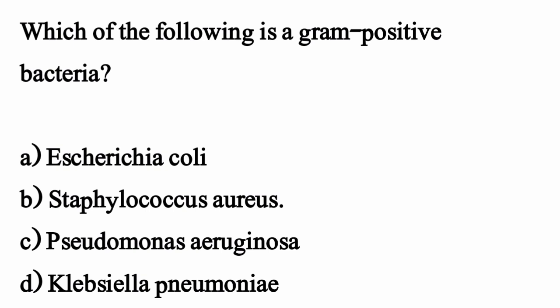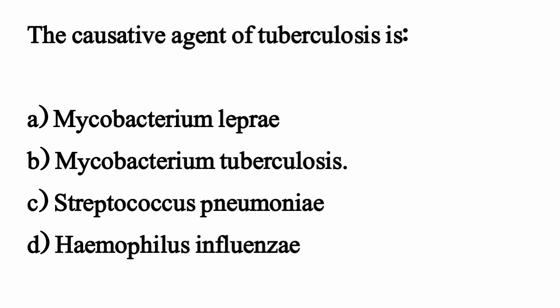Which of the following is a gram-positive bacteria? The correct option is option B: Staphylococcus aureus. The causative agent of tuberculosis is — the correct option is option B: Mycobacterium tuberculosis.